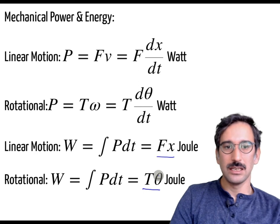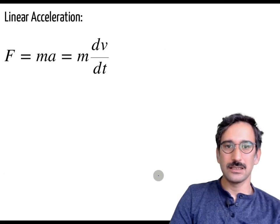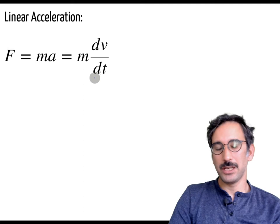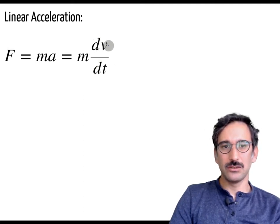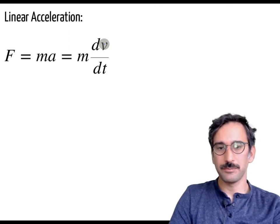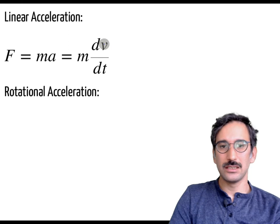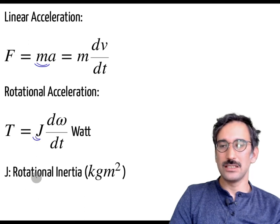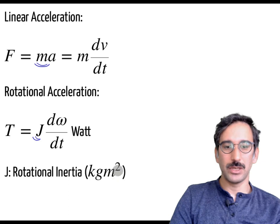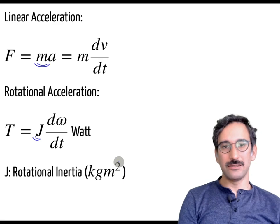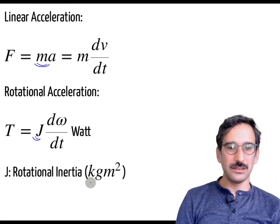On the mechanical side, in linear motion F = ma, where acceleration is the derivative of velocity with respect to time, giving meters per second squared. In rotational systems the same relationship holds, but instead of mass we have J, the rotational inertia, with units of kilogram-meter squared. A larger disc is more difficult to accelerate than a smaller one.